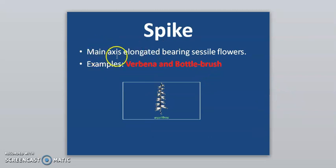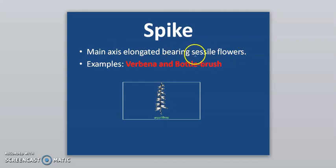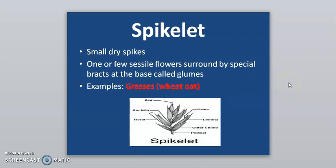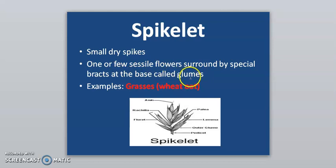In a spike, the main axis is elongated bearing sessile flowers — example is Verbena and Bottle Brush. Spikelets are small dry spikes with one or few sessile flowers surrounded by special bracts at the base called glumes — example is grasses including wheat and oat.